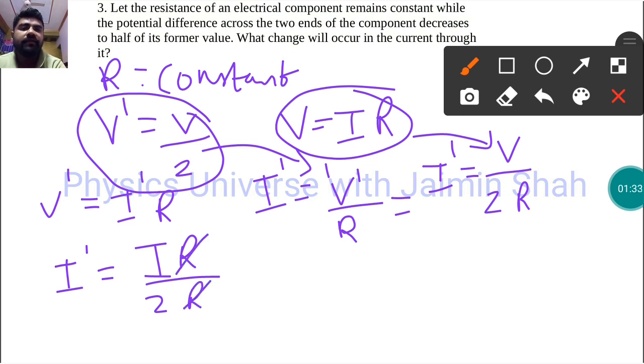We are left with I dash is equal to I by 2. So current also becomes half of its former value. If we decrease voltage to half of its former value, then current also becomes half of its former value.